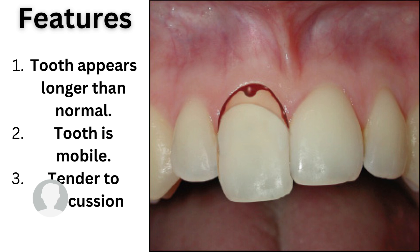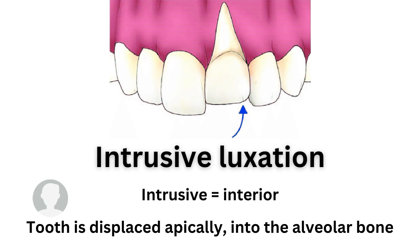The opposite of extrusive is intrusive. From the name, it means going inside — interior. So the tooth will be displaced apically into the alveolar bone, which means that crushing of the alveolar bone can take place. The alveolar bone is the bone that holds the teeth in place, so displacing the tooth inside results in crushing of the alveolar bone.